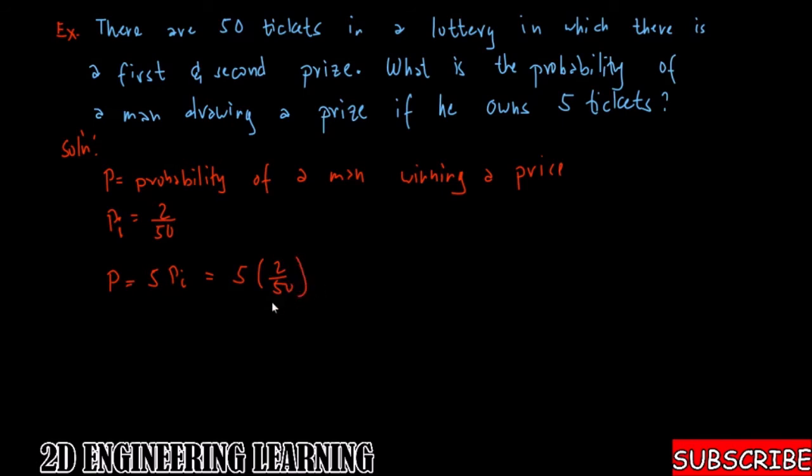So you will have 1/5. So this now will be your answer. It's just a very simple problem on probability. The man has one out of five chances of winning a first or a second prize.